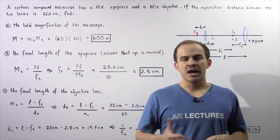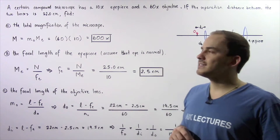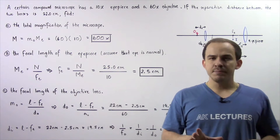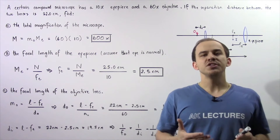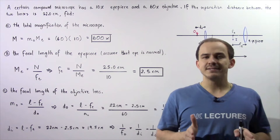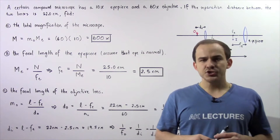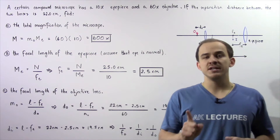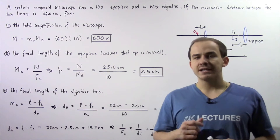In the previous lecture, we learned about compound microscopes. Now let's apply what we learned to the following example. Suppose we have a compound microscope with an eyepiece magnification of ×10 and an objective lens magnification of ×60. If the distance between the two lenses is 22 centimeters: in part A, find the total magnification; in part B, find the focal length of the eyepiece assuming a normal eye; and in part C, find the focal length of the objective lens.